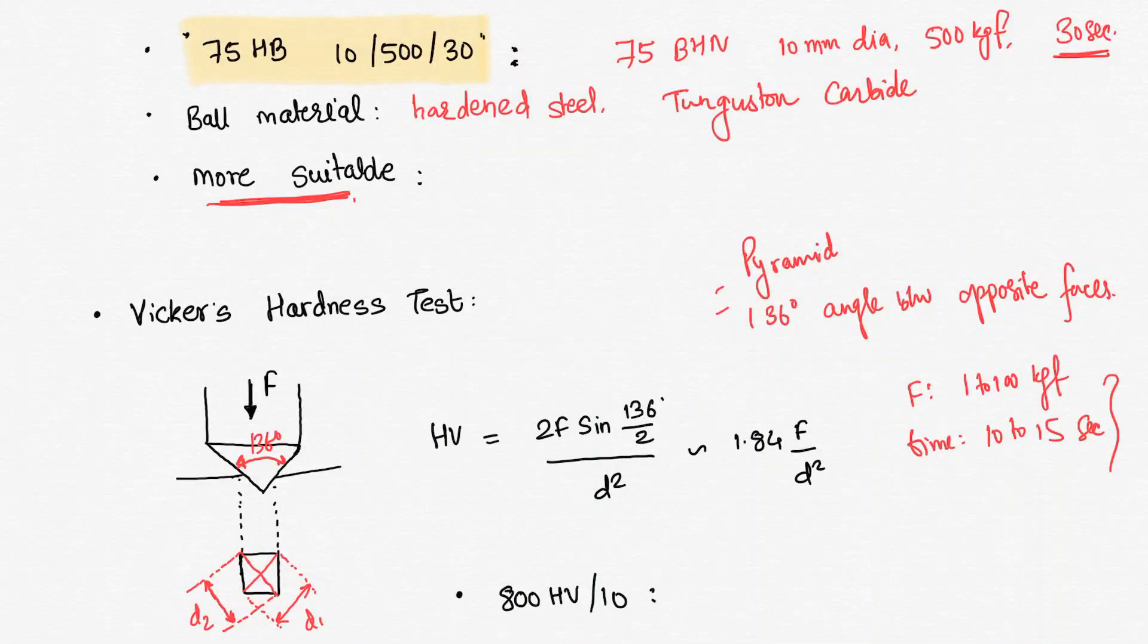Then once I get the indentation, I will measure these two lengths D1 and D2 which are the diagonals of the indentation. D1 and D2 average is D = (D1 + D2) / 2, and based upon that I am going to calculate the Vickers hardness. The formula is 2P sin(136°/2) / D².